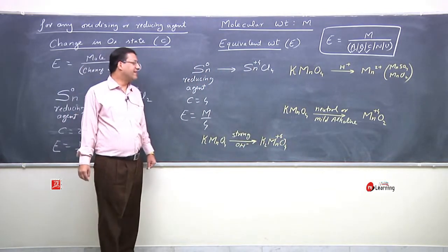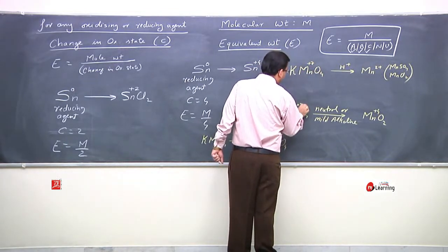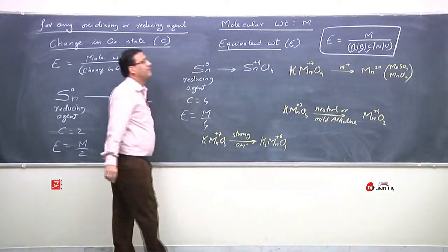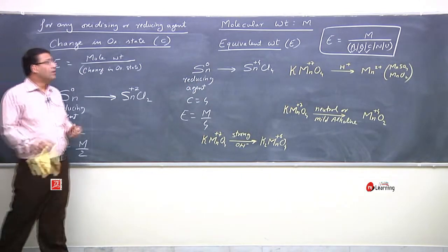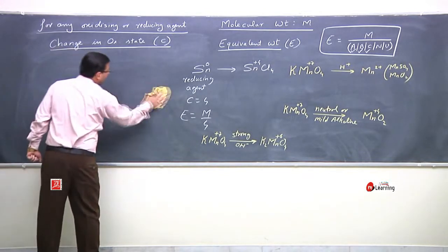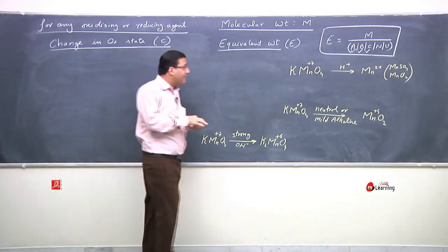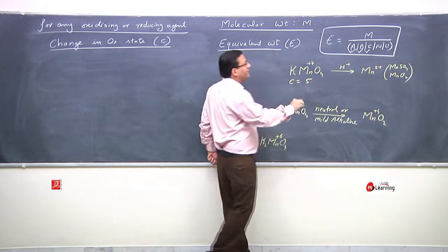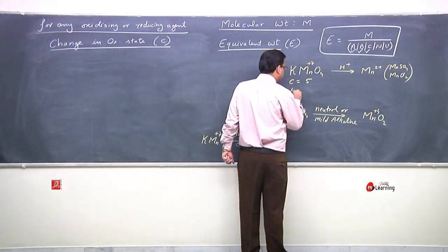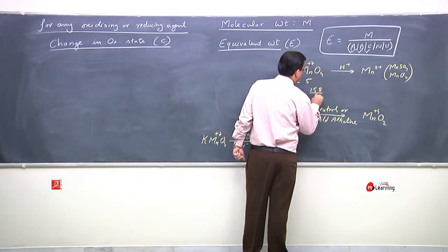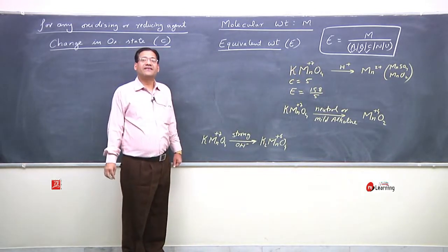Observe the three different reactions of KMnO4 under three different conditions. In KMnO4, Mn has oxidation state +7. In acidic medium, Mn goes from +7 to +2, so the change in oxidation state is 5. Therefore the equivalent weight is 158 upon 5, where 158 is the molecular weight of KMnO4.